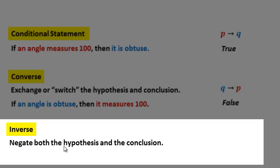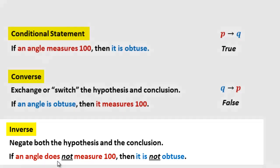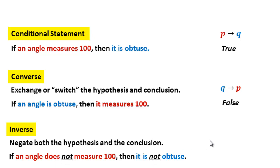Now let's take a look at the word inverse. It means to negate both the hypothesis and the conclusion. Negate means the opposite statement — for example, 'is' becomes 'is not,' and 'does' becomes 'does not.' So negating the original conditional statement, we change it to: if an angle does not measure 100°, then it is not obtuse. In symbolic notation this is written as: if not P then not Q. Now for the truth value: if an angle does not measure 100°, then it is not obtuse. An angle of 101° does not measure 100° but is still obtuse — that one counterexample makes this false.